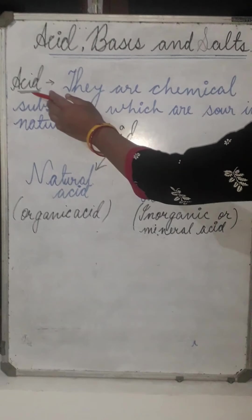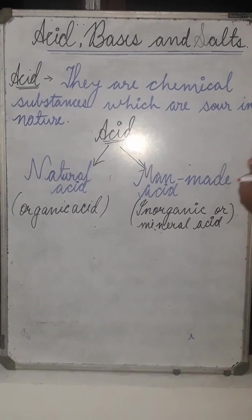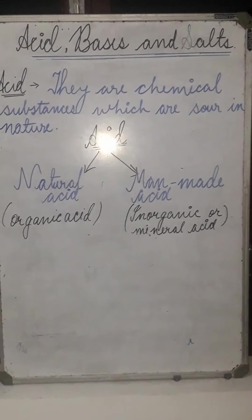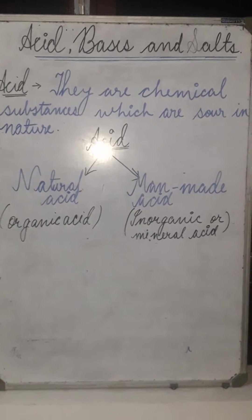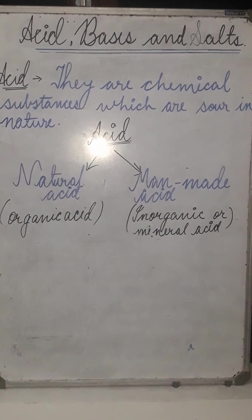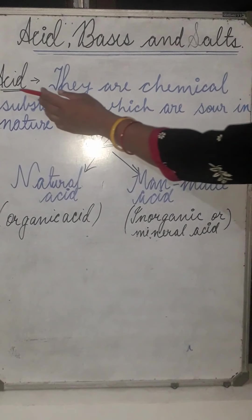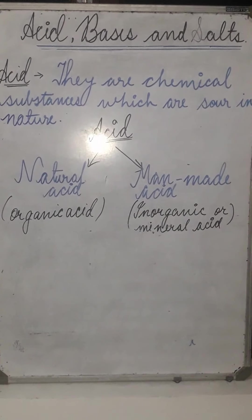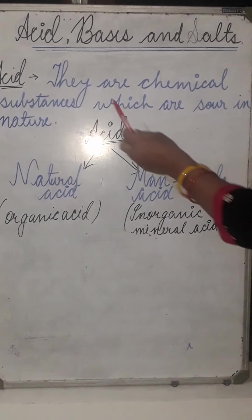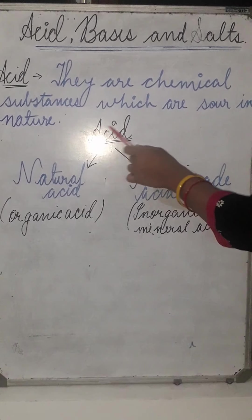So now what are acids? Let's begin. If we are given lemon juice in one container and soap solution in the other, can you tell me the difference between the two? Lemon juice is sour in taste and soap solution is bitter in taste. The word 'acid' comes from a Latin word 'Acidus,' which means sour. So acids are the chemical substances which are sour in nature.